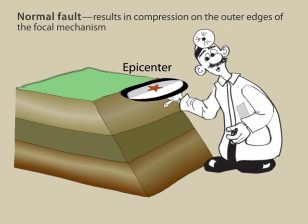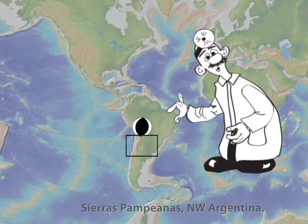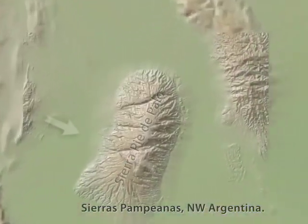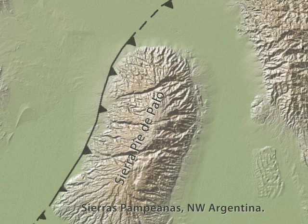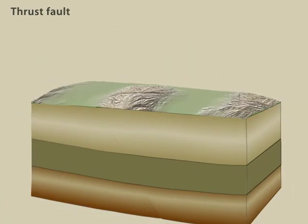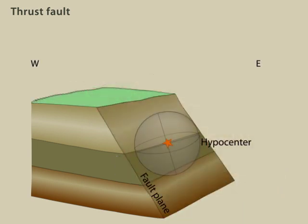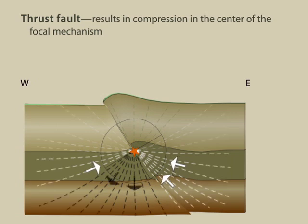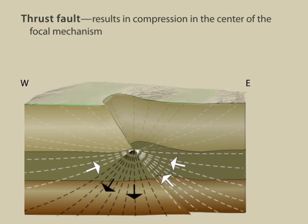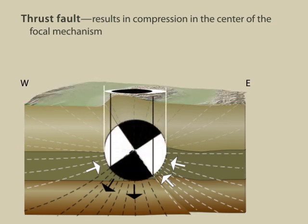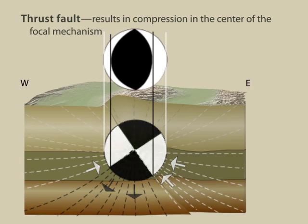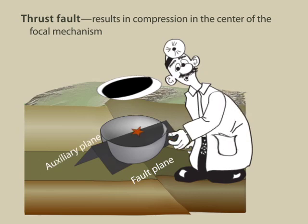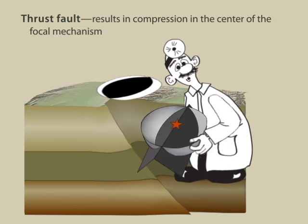Finally, let's consider a thrust fault, like that beneath Sierra Pie de Paolo within the Sierras Pampeanas of northwest Argentina. This is a west-vergent thrust fault wherein the block on the east moves up and over the block on the west. Viewed in cross section, dilatational first arriving P waves radiate to the east and west from the hypocenter at shallow and intermediate downward angles, whereas the compressional first arriving P waves leave the hypocenter at steep downward angles. The resulting focal mechanism has perpendicular nodal planes with the same orange slice appearance observed for a normal fault. However, for a thrust fault earthquake, dilatations are on the outside and compressions are in the center. This cat's eye focal mechanism is the signature of an earthquake on a thrust fault produced by compressional tectonic forces.